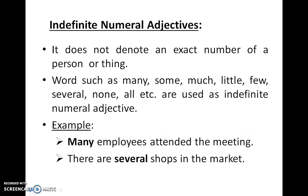Indefinite numeral adjectives do not denote an exact number of a person or thing. Words such as many, some, much, little, few, several, none, all, etc. are used as indefinite numeral adjectives — meaning when you are not sure about the exact or definite number. Examples: 'Many employees attended the meeting' — but how many exactly, we don't know. 'There are several shops in the market' — but how many shops, we don't know.